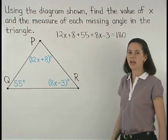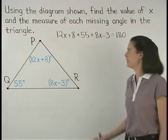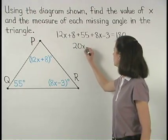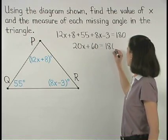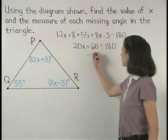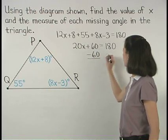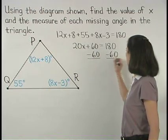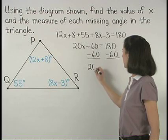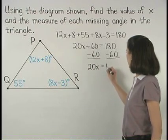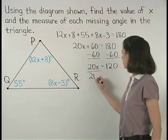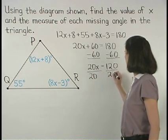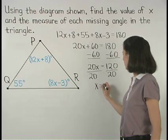Simplifying on the left side, we have 20x plus 60 equals 180. Subtracting 60 from both sides gives us 20x equals 120. And dividing both sides by 20, we find that x equals 6.